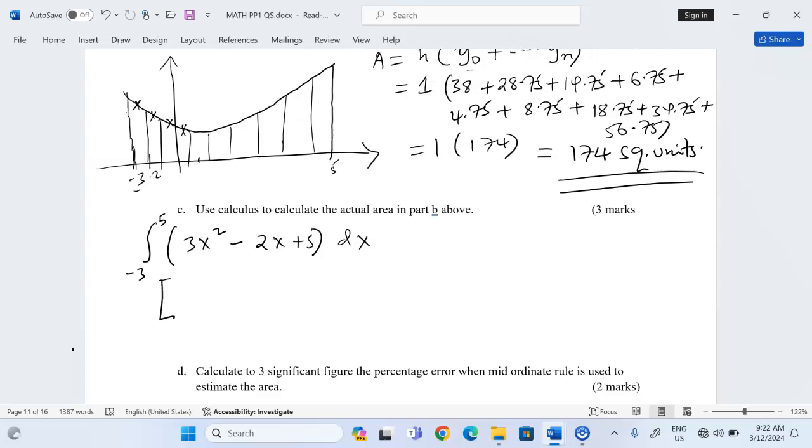When we integrate this, we're going to have the power of x increases to 3 here and the 3 divides such that 3 will cancel. And we have negative x becomes power 2 and the 2 divides such that 2 cancels. So, x squared plus 5x then plus a constant, the arbitrary constant.